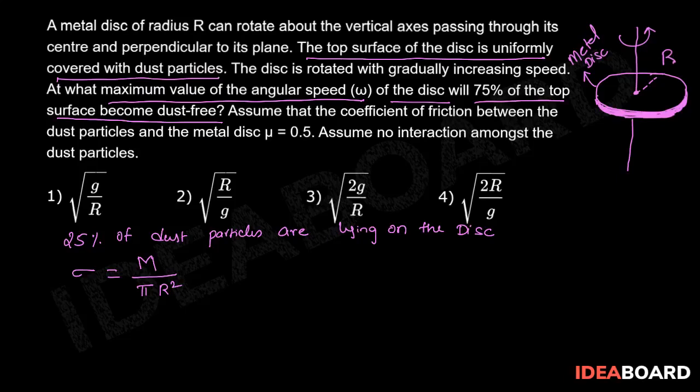Now 25% of dust particles means the mass is M upon 4. Let us suppose that this M upon 4 mass of dust particles are spread in a radius of X. Then this will be equal to sigma multiplied by pi X square. On substituting the value of sigma and simplifying, we get X equal to R upon 2.